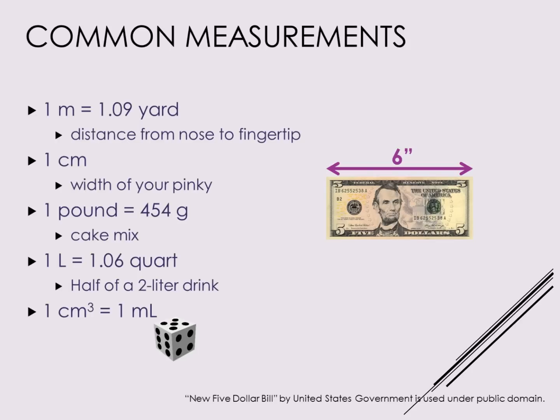For example, one meter is 1.09 yards — but what does a meter actually look like? It's about the distance from your nose to your fingertip. You can also think of a yardstick, which is about the same distance as a meter — not exact but close enough to picture it. One centimeter is about the width of your pinky. So if I convert three miles into centimeters and get six centimeters, clearly six pinky-finger widths is not the same as that mileage.